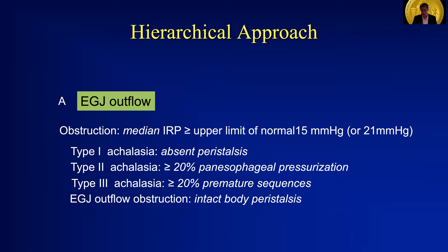So those are all the basic tools. When we put all of this together, we can come to a hierarchical approach in evaluating our final diagnosis, which is really the most important part. We start by looking at the IRP, beginning with esophagogastric junction outflow. I must give credit to Dr. Prakash Kahrilas at Washington University in St. Louis, who developed this particular hierarchical approach algorithm. EGJ outflow is measured by the integrated relaxation pressure, and an obstruction of EGJ outflow is therefore a median IRP greater than the upper limit of normal — 15 mmHg for the Medtronic system, and 21 mmHg for the commonly used Sandhill system.